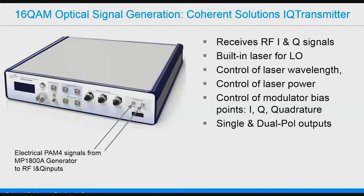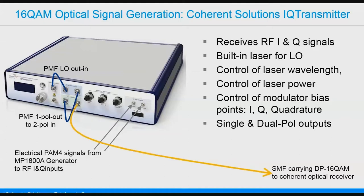Here we're using the Coherent Solutions IQ transmitter, which receives the PAM-4 signals and forms the optical signal output. It includes a built-in tunable narrow linewidth laser as the local oscillator. We use PMF to bring that internal laser around as our LO source. It has both single and dual polarization capability — we connect single pole out to dual pole in, then take the dual pole out on single mode fiber, carrying our DP-16 QAM signal to the coherent optical receiver.